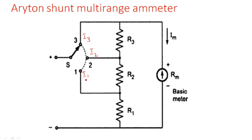When I1 is selected, the switch is connected to the first position, so the I1 range is selected, and R1 is the resistor that comes in parallel, which is the series connection of R2, R3, and then Rm. We will see how the circuit looks like for each and every connection — when the switch is connected to the third, second, and first positions.